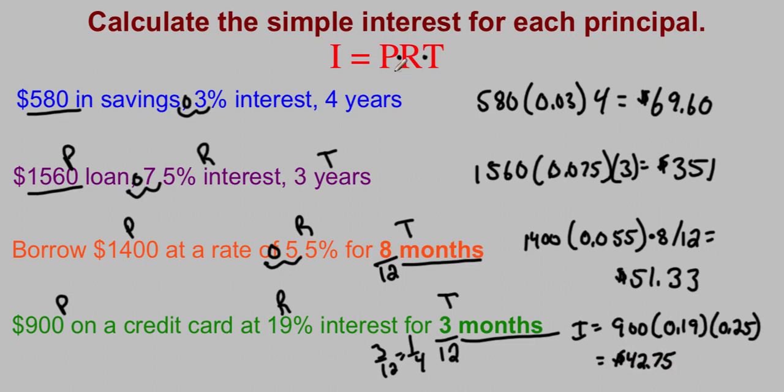Simple as that, plug in the three pieces that you know, multiply them together, just watch for that months versus years part, and then find your answer.